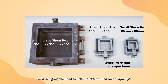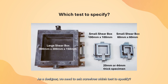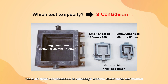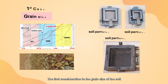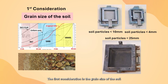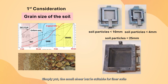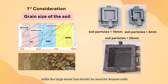As a designer, we need to ask ourselves which test to specify. There are three considerations in selecting a suitable direct shear test method. The first consideration is the grain size of the soil. Simply put, the small shear box is suitable for finer soils, while the large shear box should be used for coarser soils.